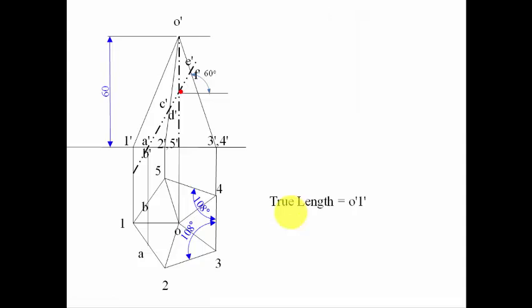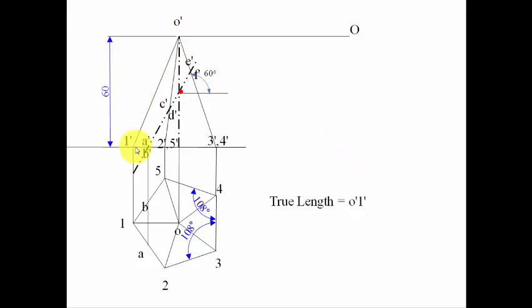Now we're going to draw a line from the origin point, marked as capital O. Take O dash to 1 dash as the radius and with O as center, draw an arc. This gives you point 1 on the development.